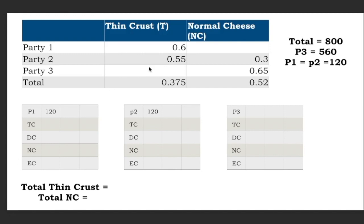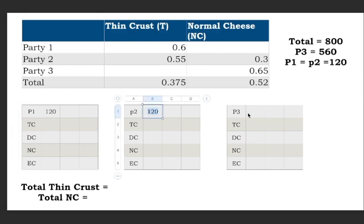There was a pizza store delivering pizzas — a total of 800 pizzas given in the story. 70 percent of those pizzas were going to party 3, so 560 pizzas. The remaining 240 were distributed equally between party 1 and party 2, so each party gets 120 pizzas. Party 1 has 120, party 2 has 120, and party 3 has 560.